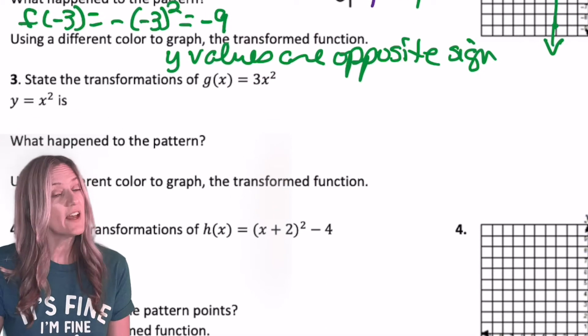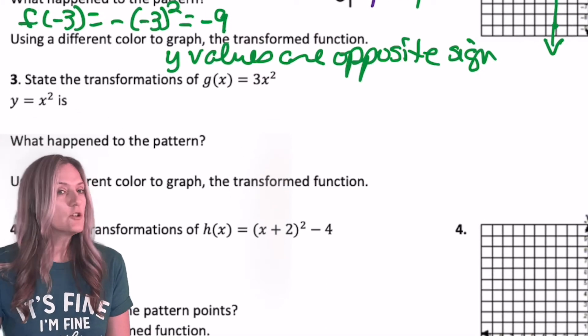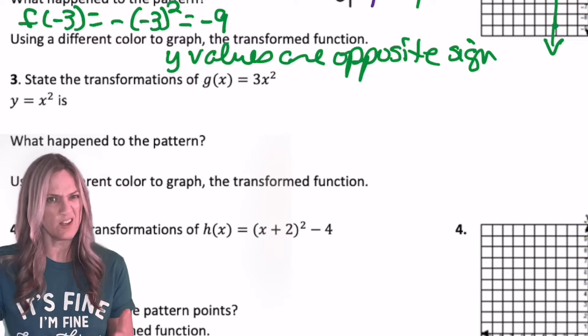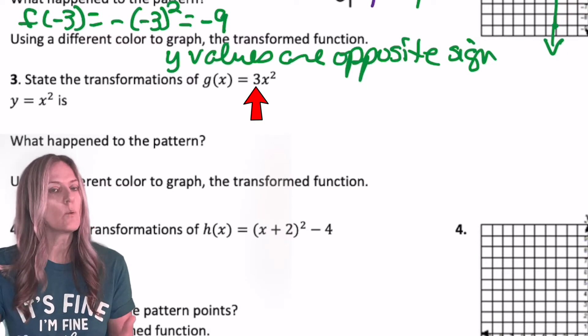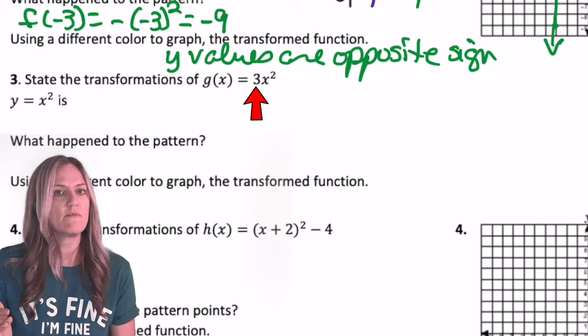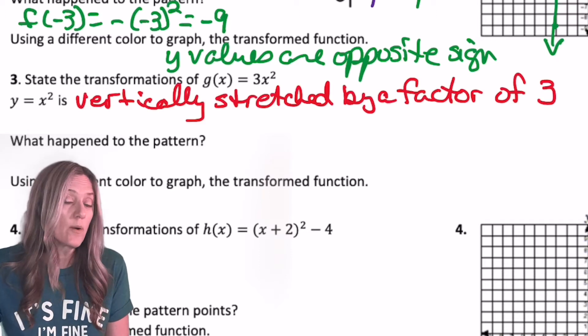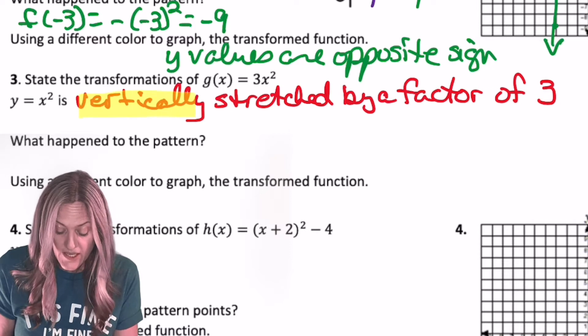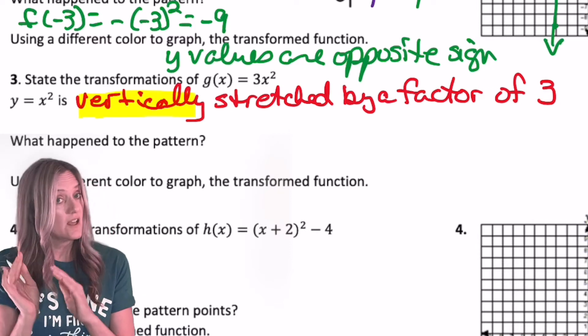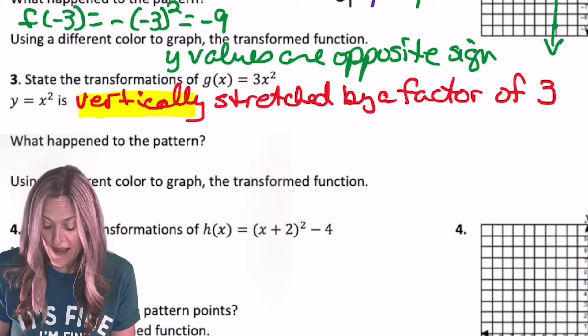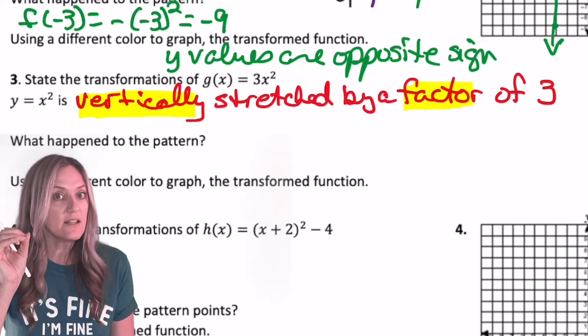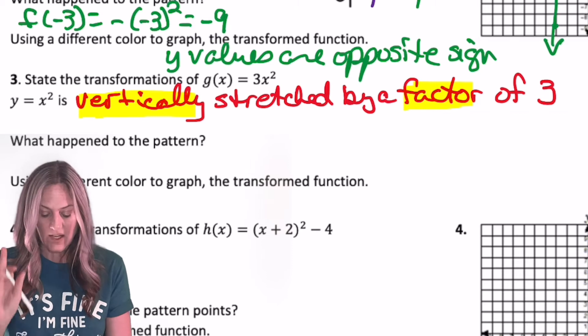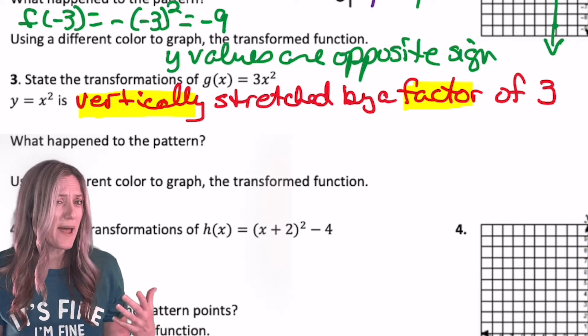Take a look at g of x now. G of x equals 3x squared. You should already know what's going to happen in terms of transformations. Can you write them? Go ahead and write, what does the 3 do to the parent function? As you check what you wrote, I want you to be very careful and aware that you needed to have that vertically stretched because it's greater than 1 and by a factor of positive 3. The factor, the dilation factor is always positive.